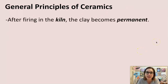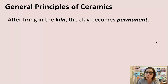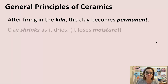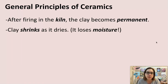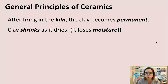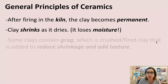After firing the clay in the kiln, the clay becomes permanent, which means we can't do anything with it other than glaze it or paint it. Once it's permanent, we can't crush it up and reuse it again — it's gone through a chemical change. Clay also shrinks as it dries, meaning it loses moisture as the water evaporates, so it actually shrinks a little bit. This does ultimately determine what we can and cannot do with the clay.